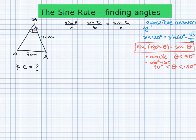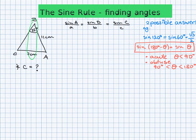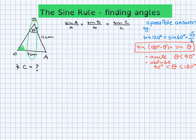Looking at the information given: we have angle B at corner B and its opposite side. We also have the side of length 11. We need to find angle C — that's the unknown. We can see the side opposite angle C has been given, which is 11.